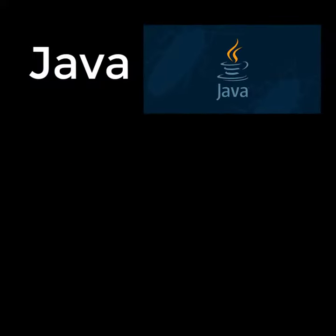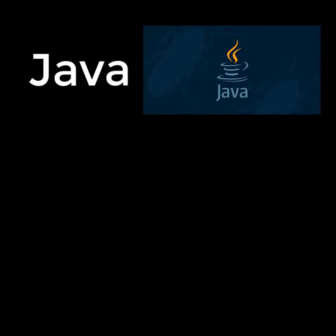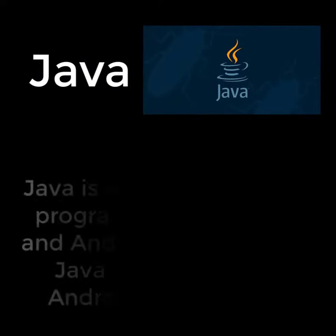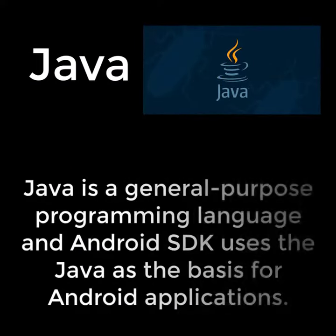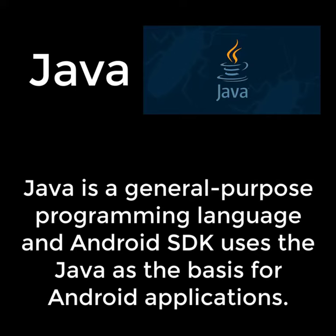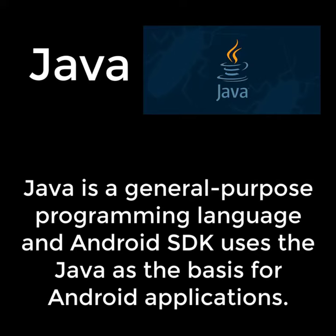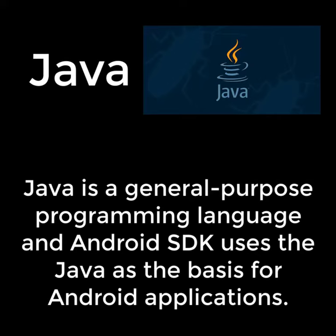Java is a general-purpose programming language, and the Android SDK uses Java as the basis for Android applications.